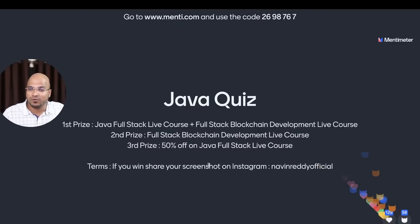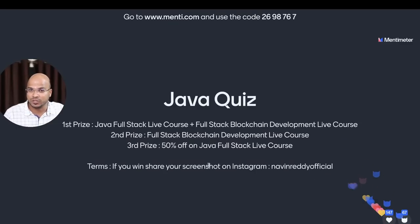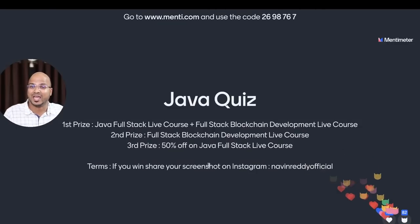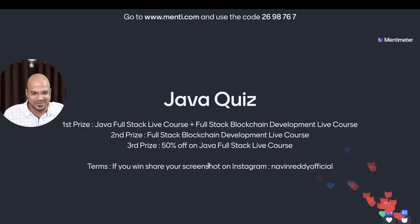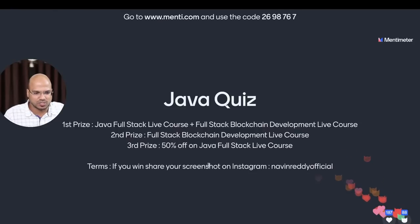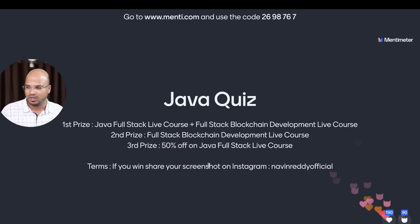The first prize winner will get the full stack Java course — the Java Full Stack Live Course which is coming next month on July 9th. I'm also coming up with a Blockchain Development Live Course starting July 16th — public blockchain. Both are six-month live courses. The first prize winner gets free access to both. The second prize winner will only get the blockchain course, and the third prize winner will get 50% off for the Java course.